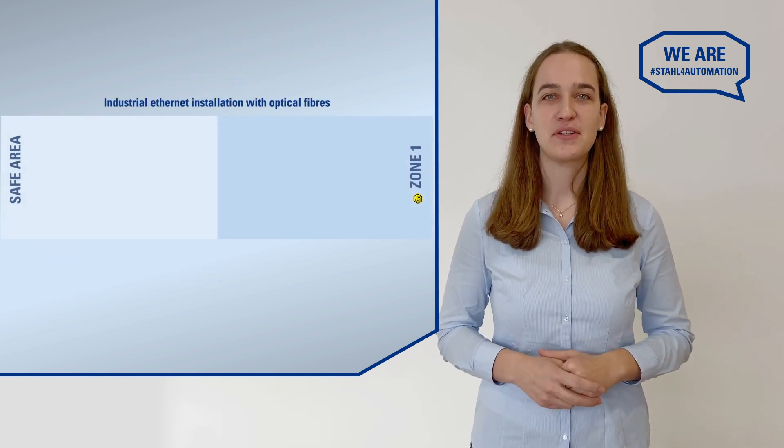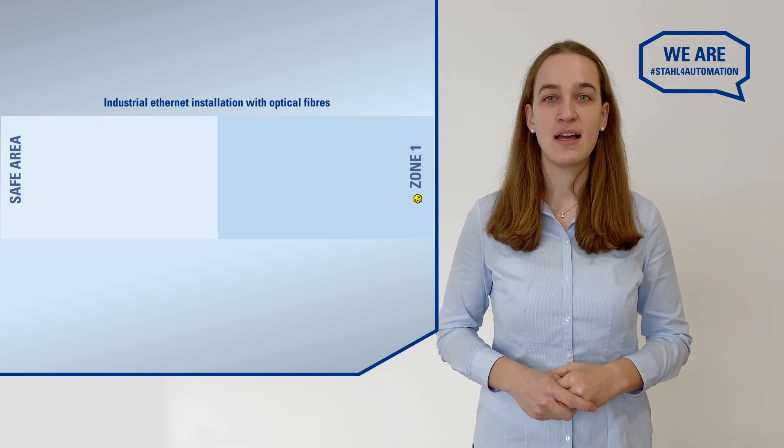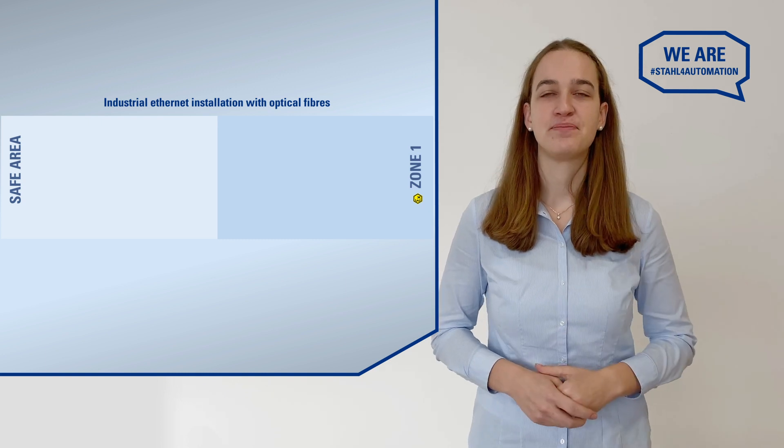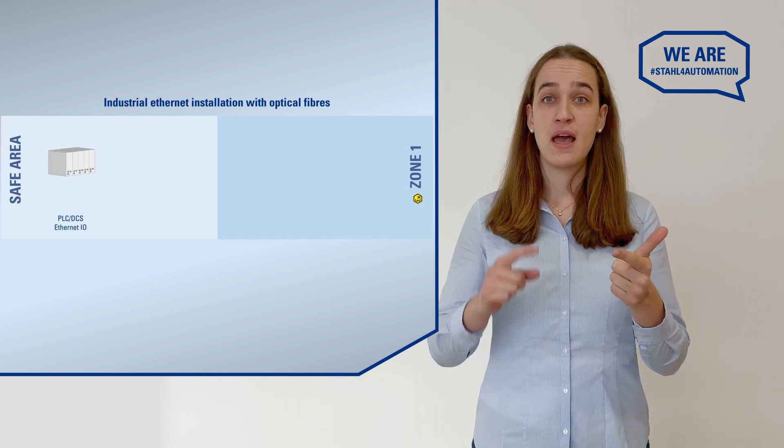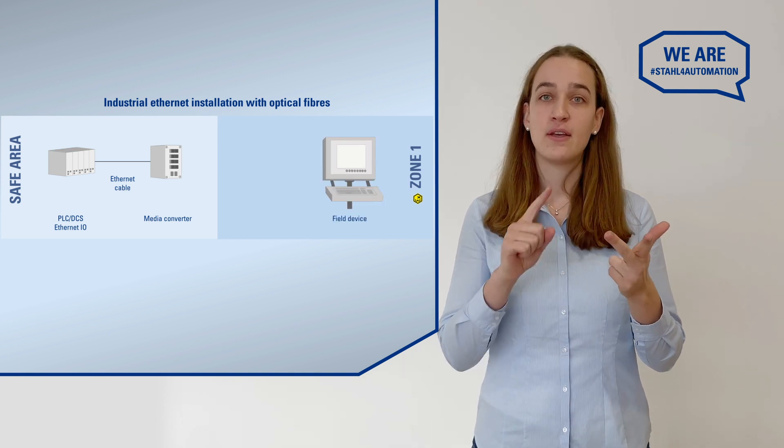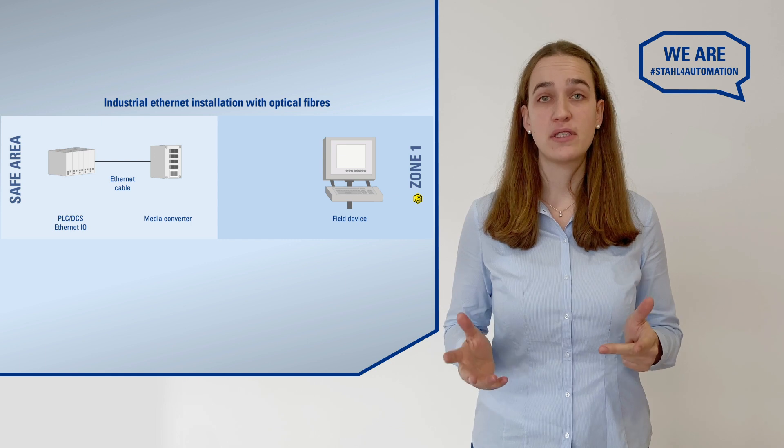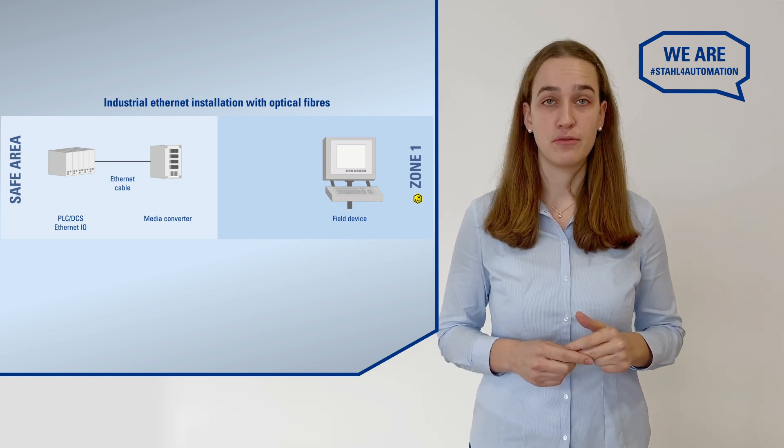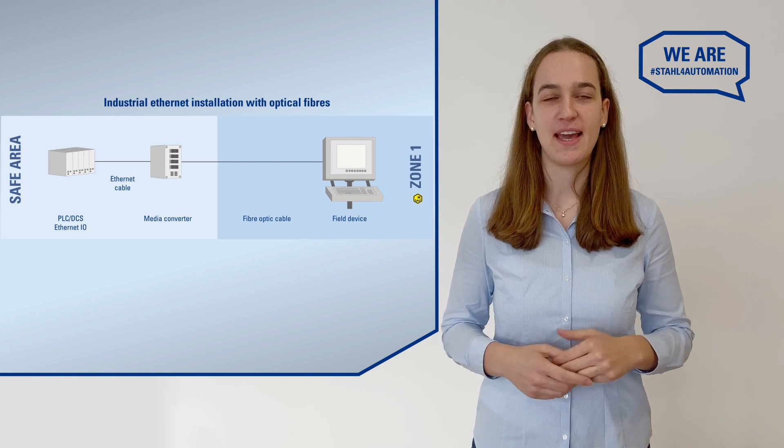In order to connect your PLC or DCS to a field device in a hazardous area, you will need four things: your Automation Systems Ethernet I.O. module, a media converter, your field device, for instance an operating station possibly fitted with another media converter, and of course a fiber optic cable to communicate on.